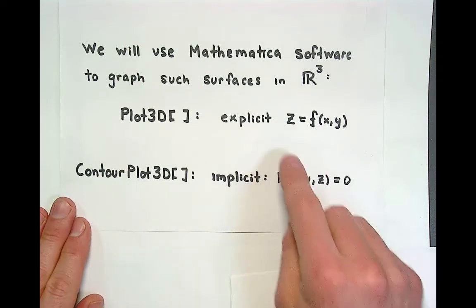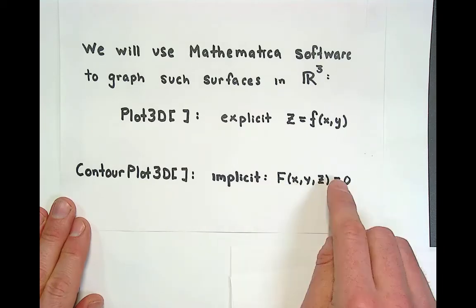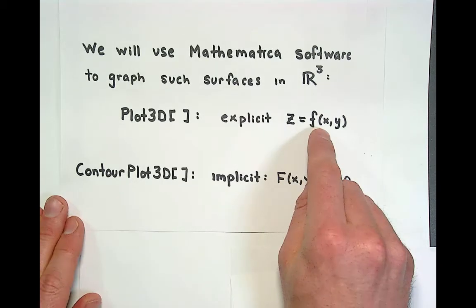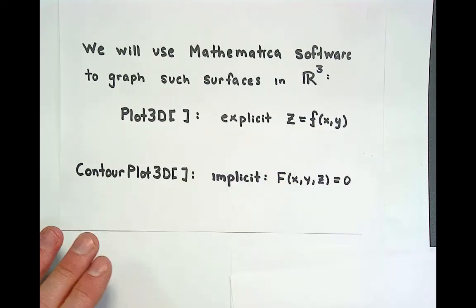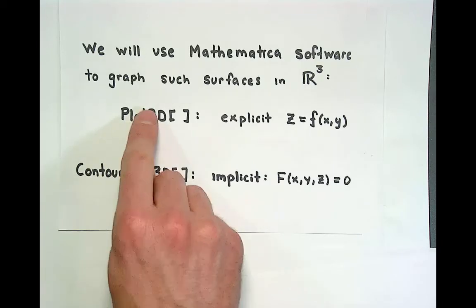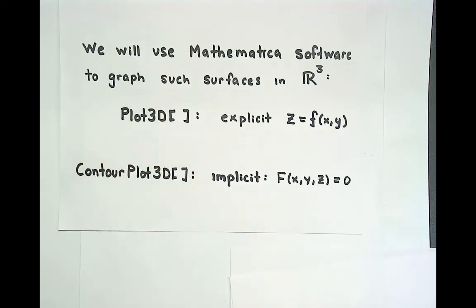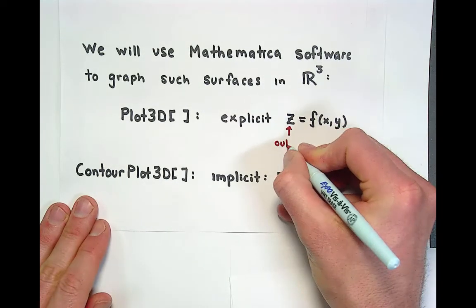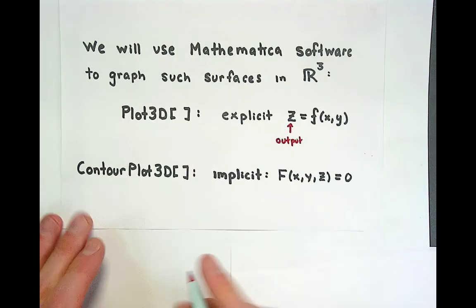Sometimes when we're looking at quadratic surfaces we can change the general implicit equation f of x, y, z equals zero into an explicit equation where we solve for z in terms of x and y. If we can do this we say that the graph is most amenable or it's easier to use Plot3D. You could use either one but the whole idea is if I can isolate the output variable in terms of the two inputs then I'm going to use Plot3D as a command.